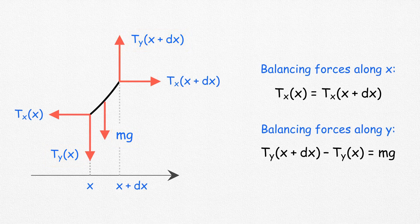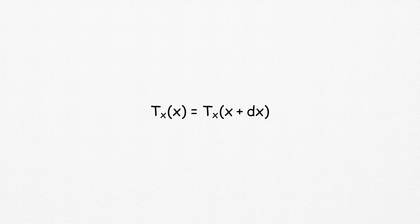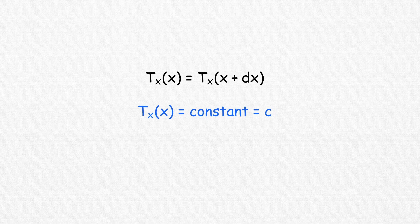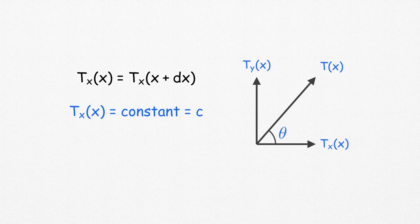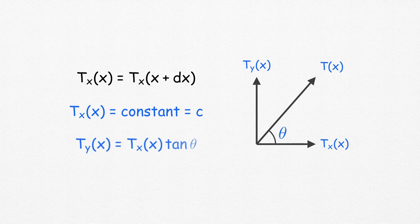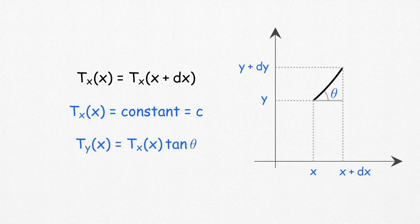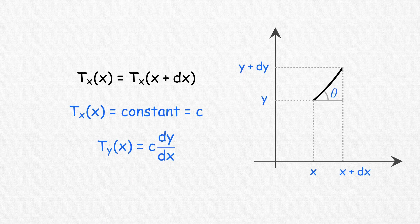Let's dive into the first equation. It states that tension's horizontal component at x is same as that at x plus dx, which means that it's constant throughout the wire. Let's call this constant c. The y component of tension can be written as Tx times tan θ, which is nothing but c times the slope, which can be expressed in terms of the first derivative of the function.